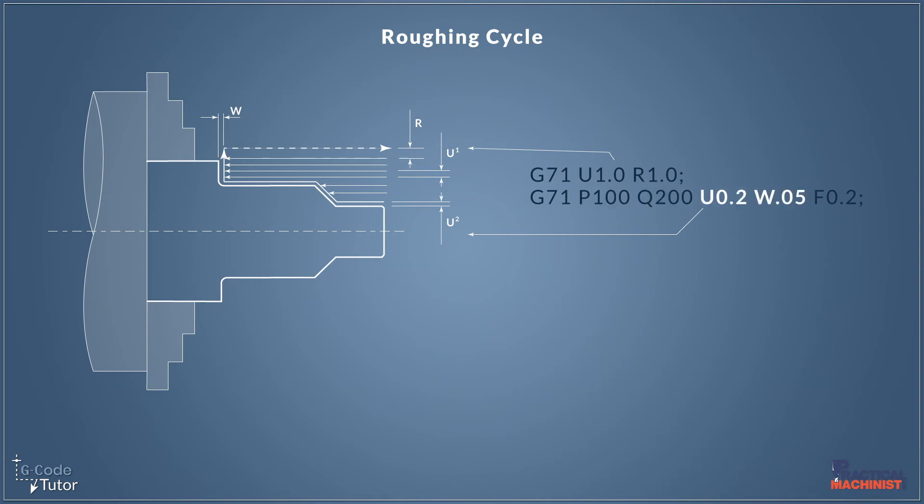Let's move on to U and W on this line. This can't be confused with U on the line above. This U is the finishing allowance in X. This is how much we want to leave on for when our finishing tool comes in and takes its final cut. I'm allowing 0.2 of a millimeter for a finishing allowance here. And our W is our finishing allowance in Z. This is how much we're leaving on the faces during our roughing cycles. This applies to the G71, G72, and G73 cycles. I'm just leaving on 0.05 of a millimeter just to clean up that front edge.